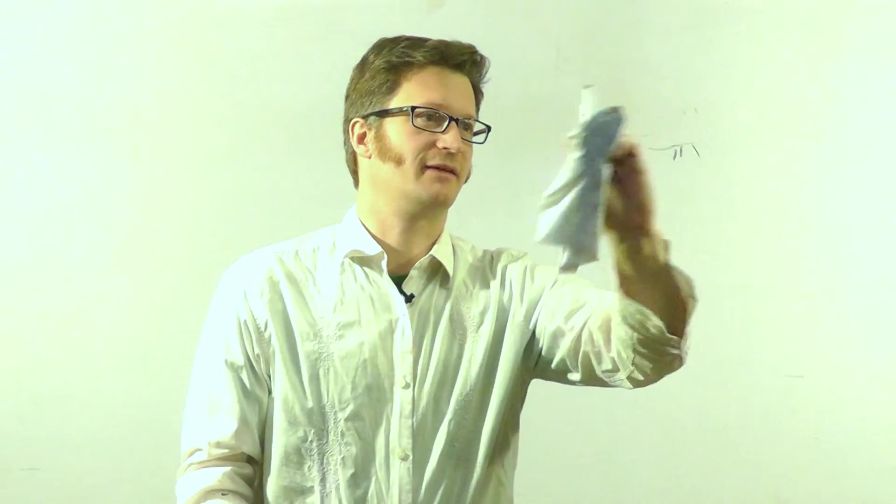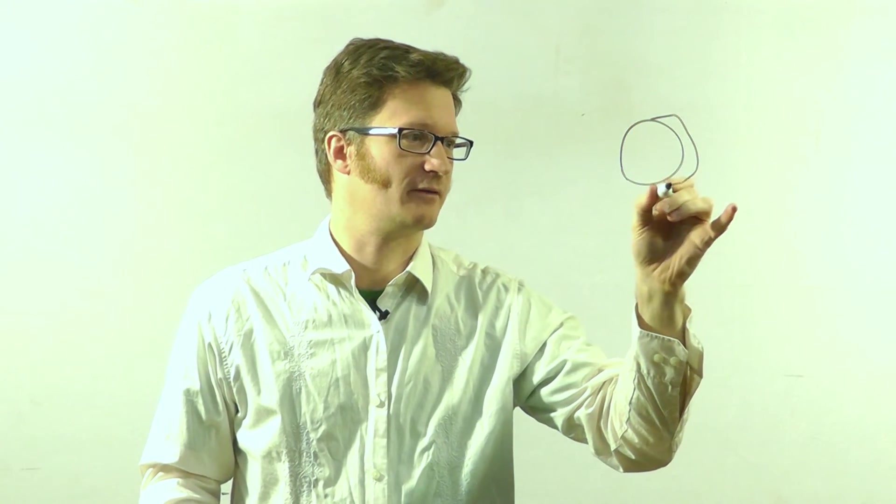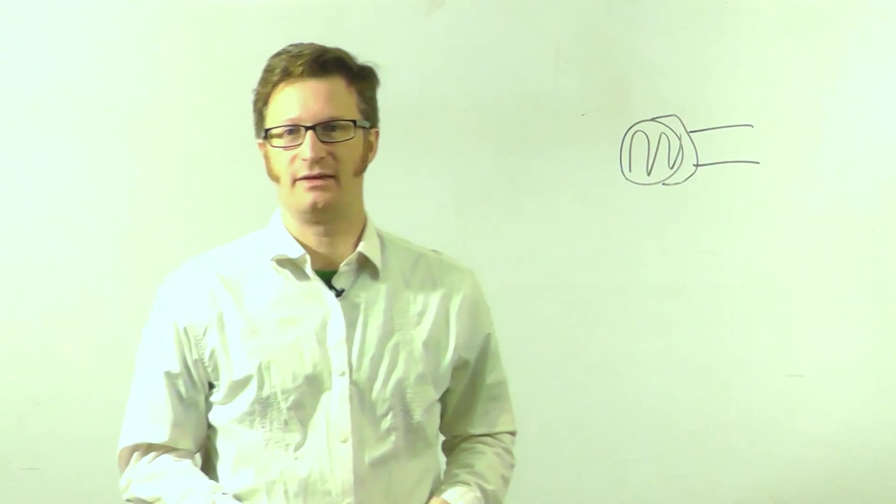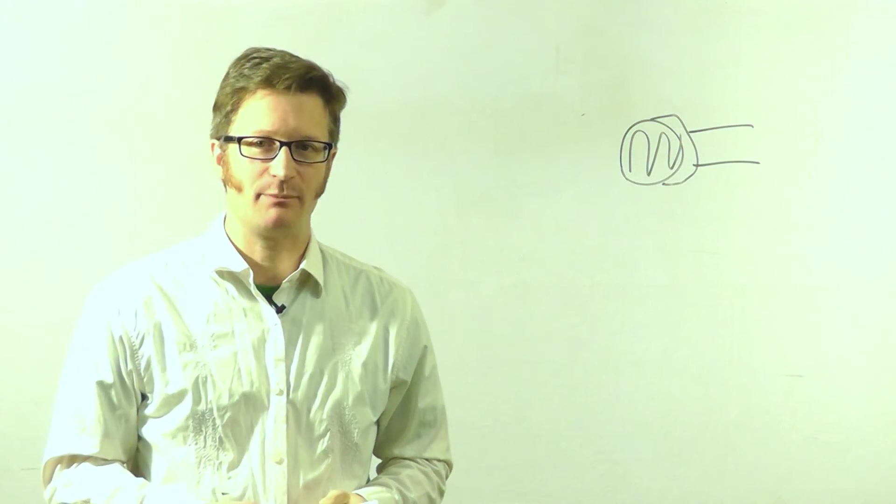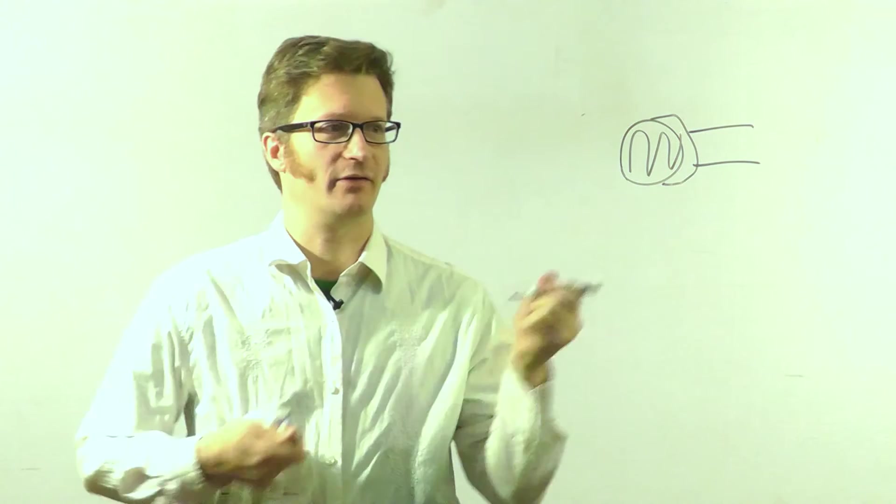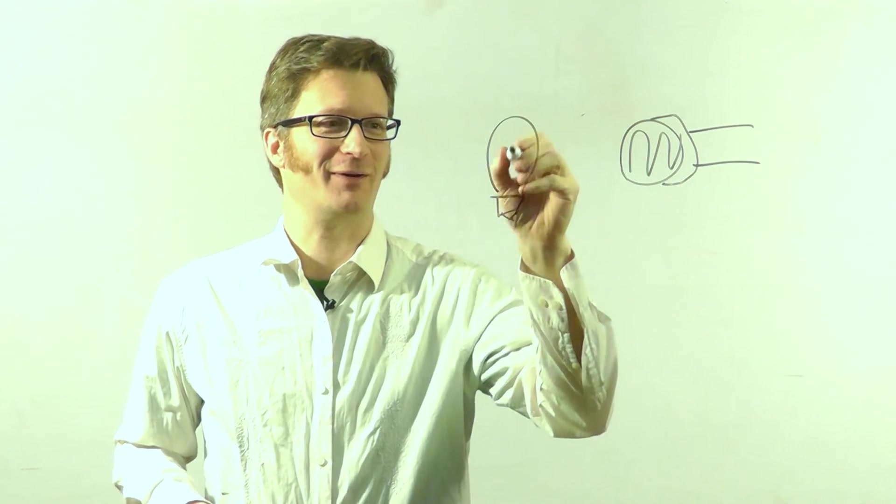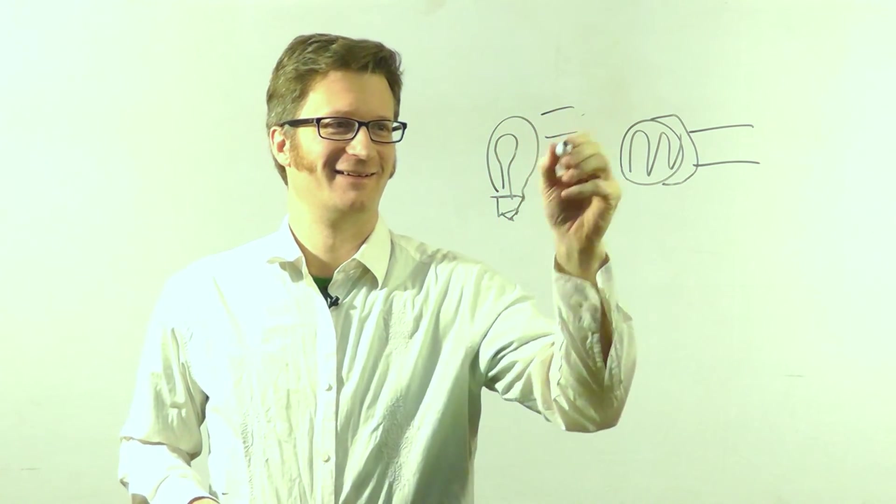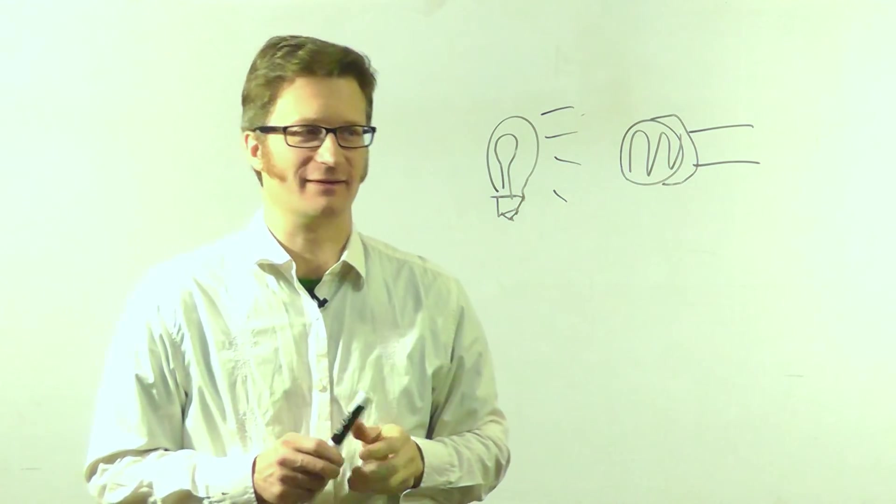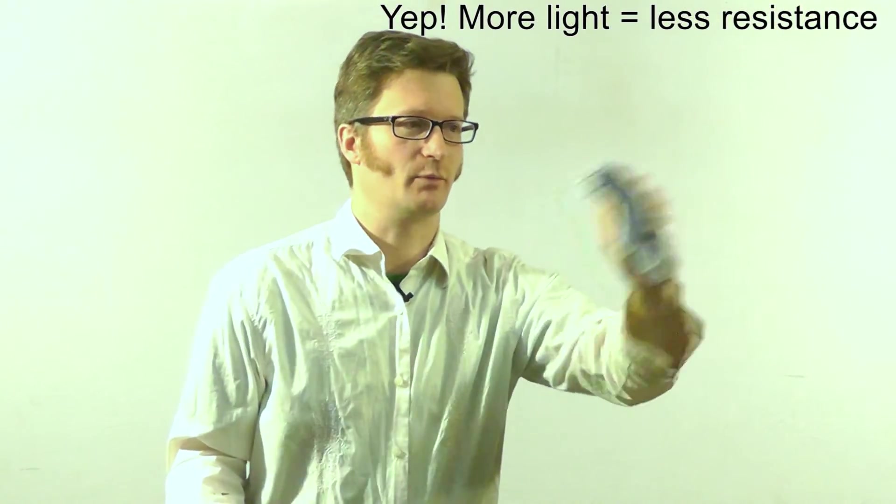Other types of resistors that you might see. This is kind of a fun one. And it's called a cadmium sulfide cell, or basically it's a photoresistor. And so the amount of light that you cast onto this resistor will vary its resistance. And I believe that it goes down as you get more light on it.